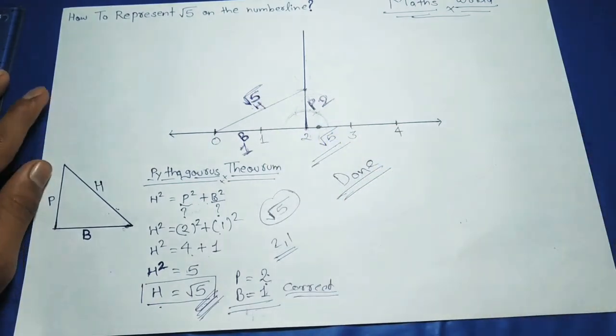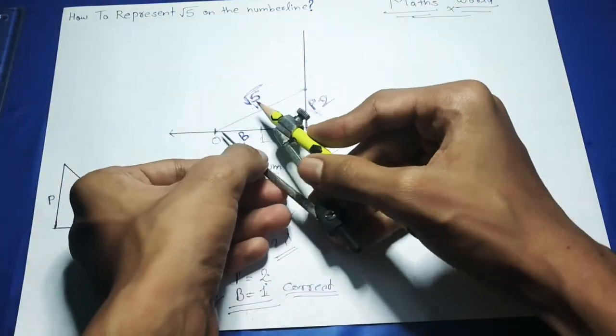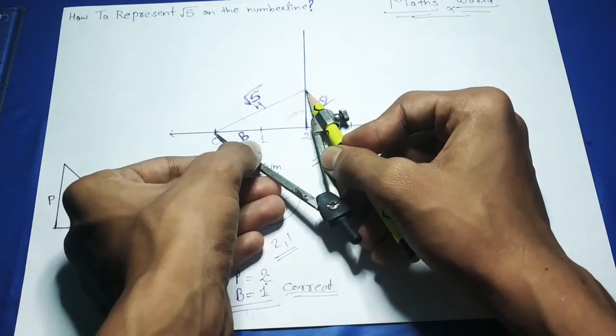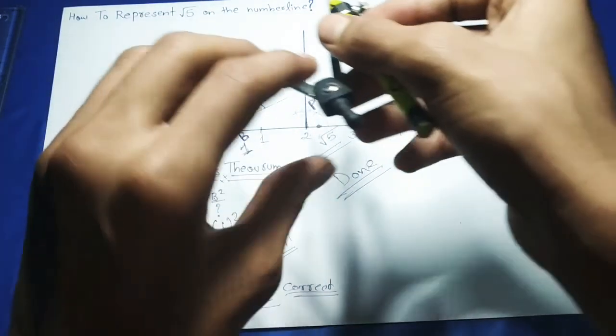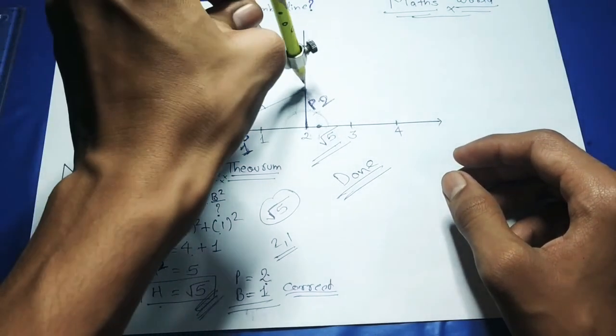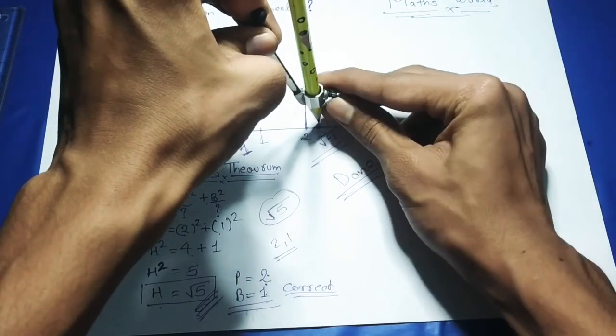From 0 to the point, we have to measure through compass, and then we point to 0. There is a line which will give us a point on the number line.